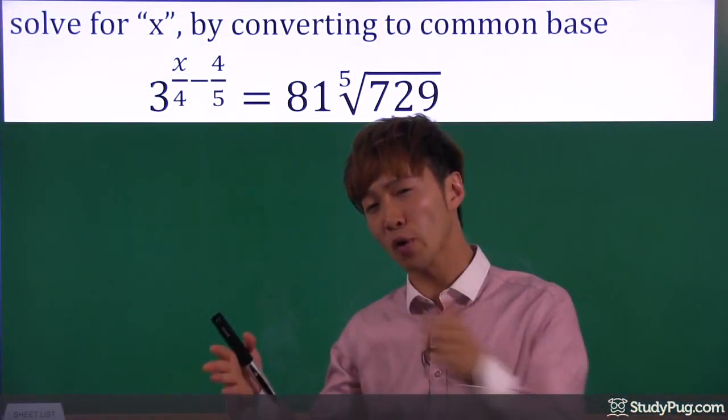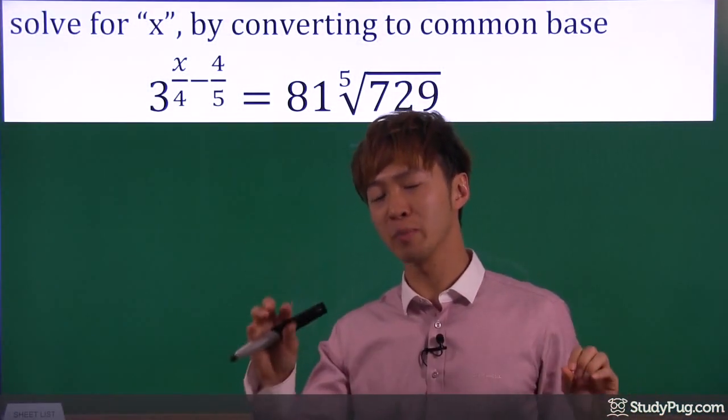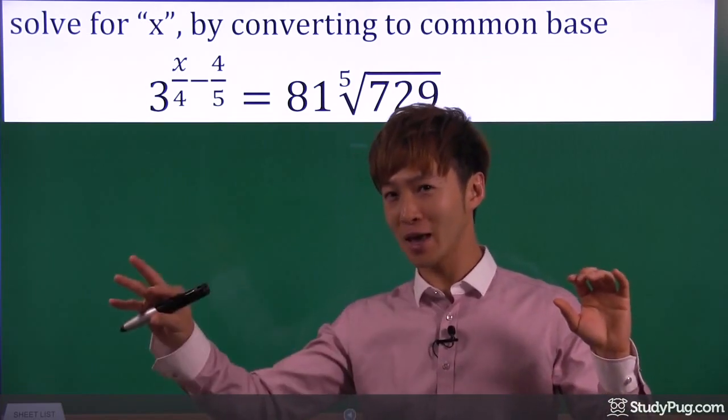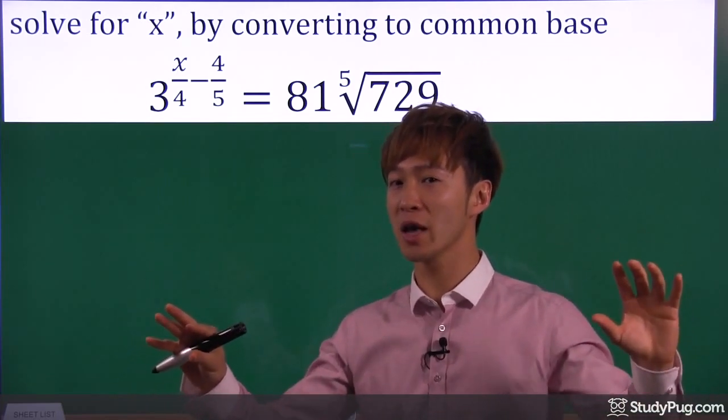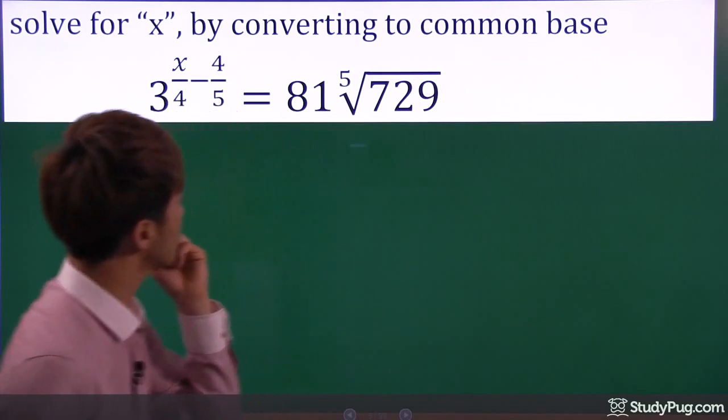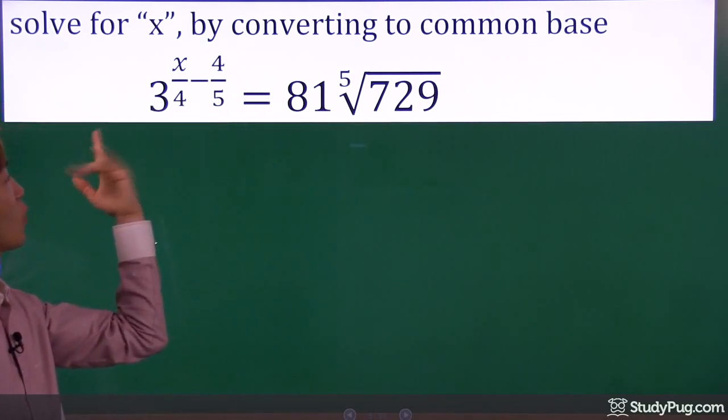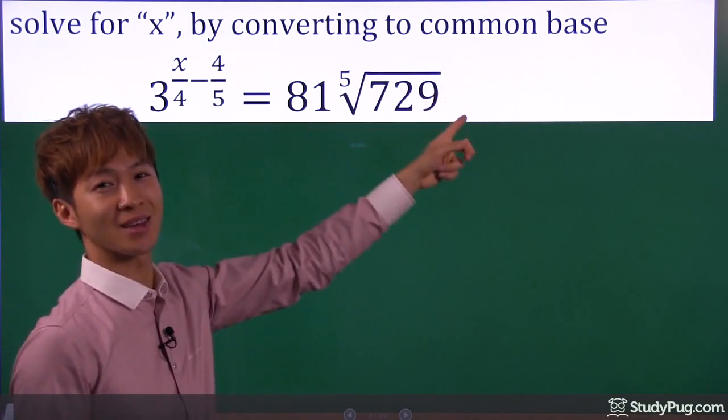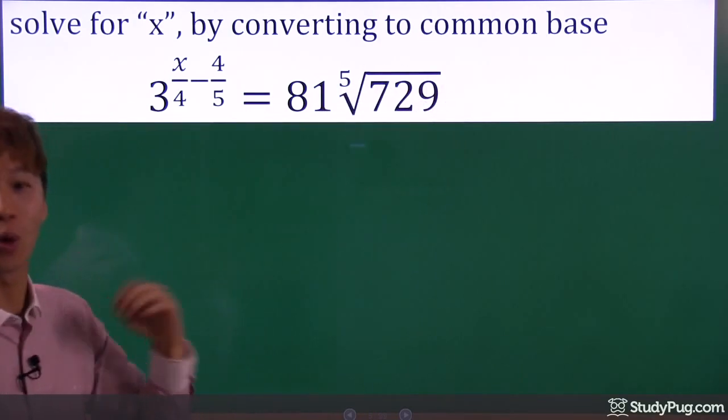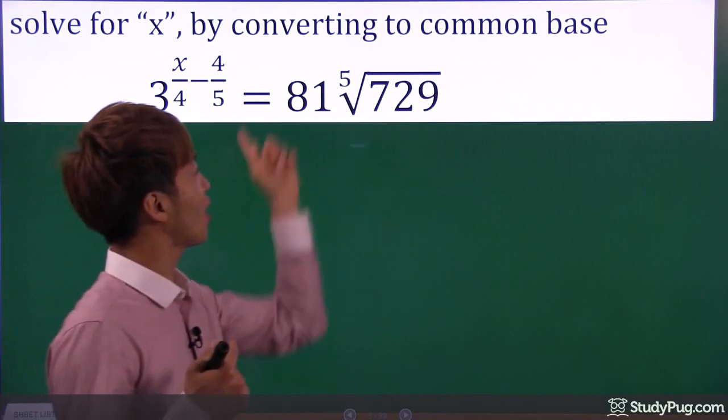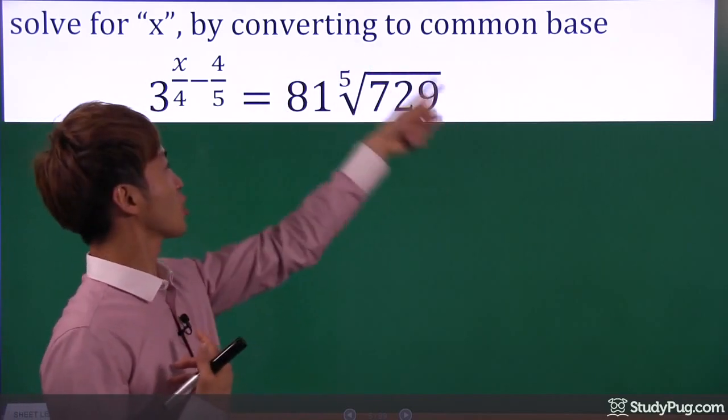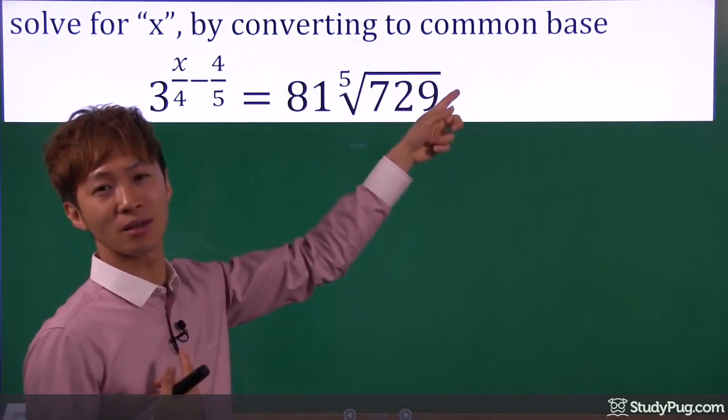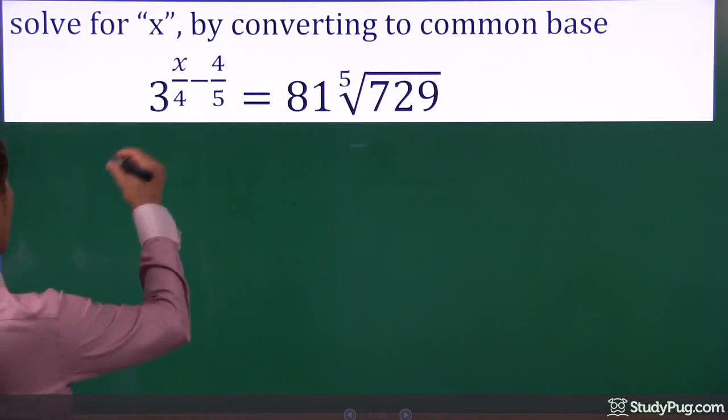So once again, in order to solve an exponential equation, we have to make sure the base on each side must be the same. Let's look at this question here. On the left side, we have base of three. On the right side, we have this ugly thingy. So what do we have to do? We have to convert this whole thing to base of three. Let's do that.